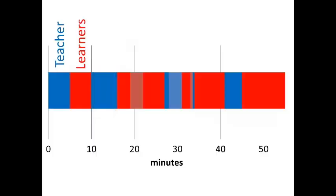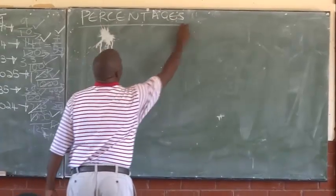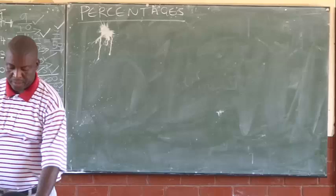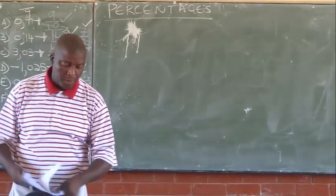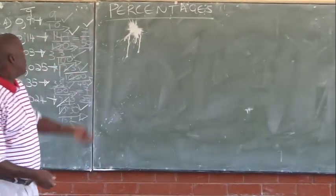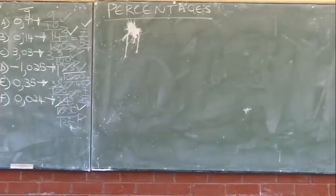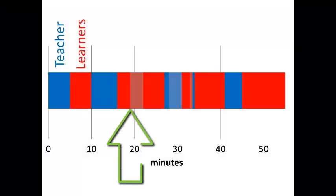Mr. Potsane then tells the learners he's giving them three minutes to do corrections. Three minutes later he calls for their attention so that he can start teaching the new work for the day.